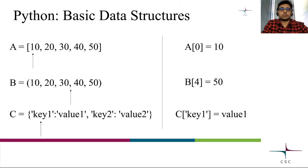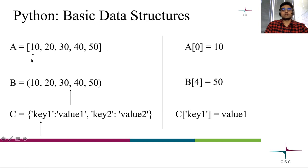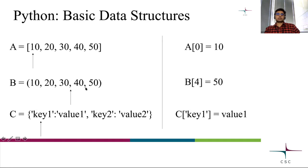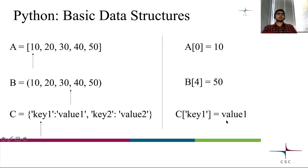Before we move on, I'd like to talk about some basic Python data structures. This is a Python list, which behaves as an array. You access elements by putting the index, starting from zero, so index zero gives you the value 10. This is a Python tuple — if you want to get the last element, you put index four and get the value 50. And this is a Python dictionary, which behaves as a key-value pair — you put the key and get the value.